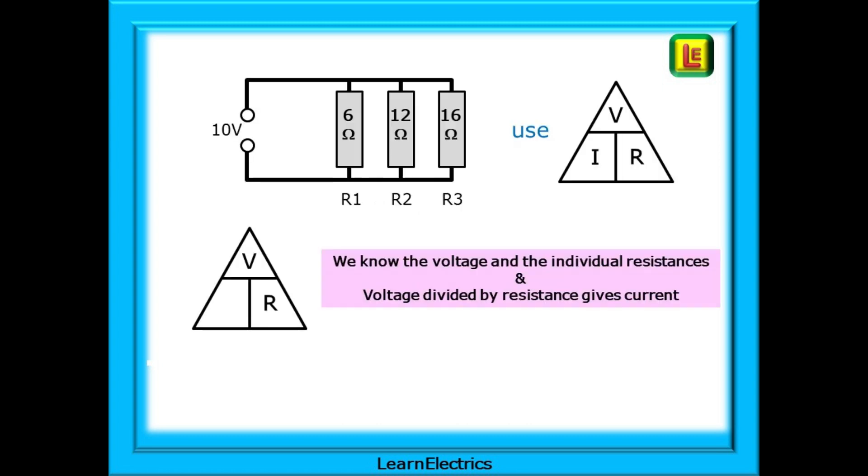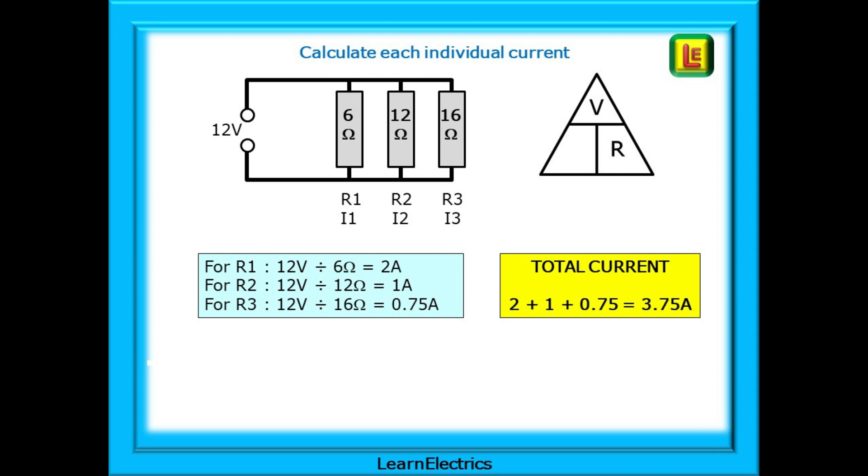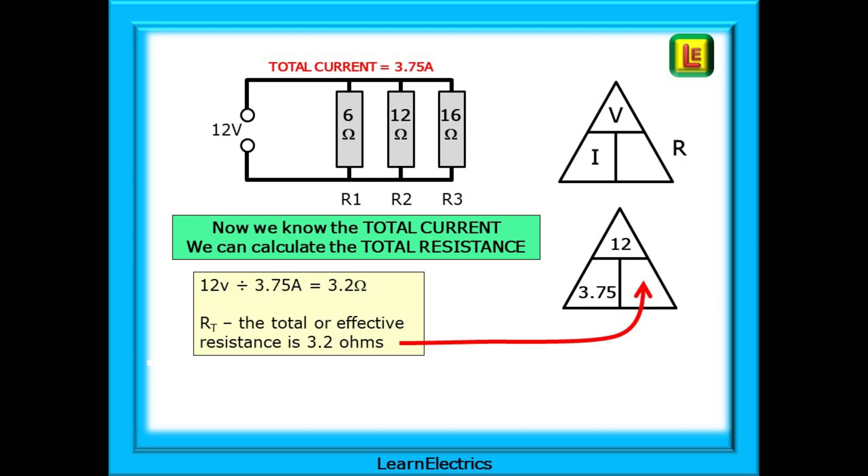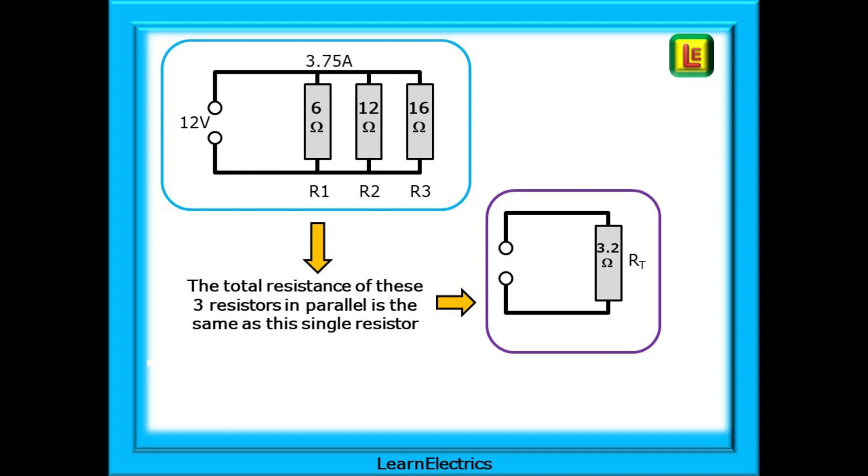We know the voltage for the circuit, and we know that every resistor has the same voltage across it. If we divide the voltage by each of the individual resistances, we will have the individual currents. 12 volts divided by 6 ohms tells us that R1 has 2 amps flowing through it. Do the same for R2 and R3, and we have 2 amps plus 1 amp plus 0.75 amps. Added together, the total current is 3.75 amps. Now use Ohm's law again. Voltage divided by total current will give total resistance. 12 volts divided by 3.75 amps is 3.2 ohms. And that's the answer. RT for the three resistors is 3.2 ohms.